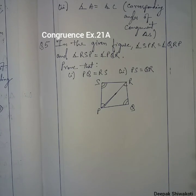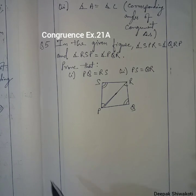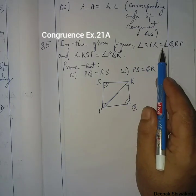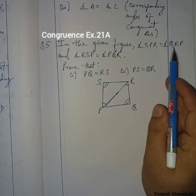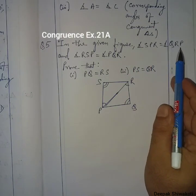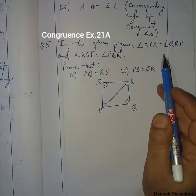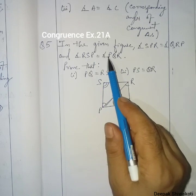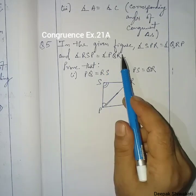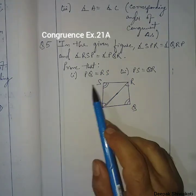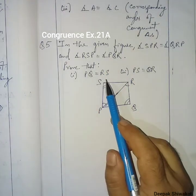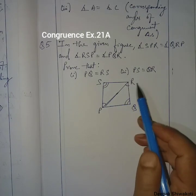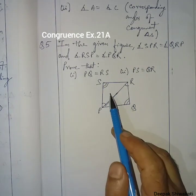Question Number 5: In the given figure, angle SPR is equals to angle QRP, and angle RSP is equals to angle PQR. We have to prove that PQ is equals to RS, and PS is equals to QR.